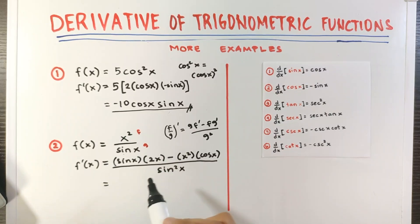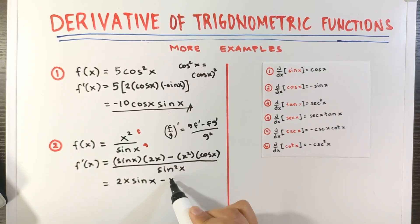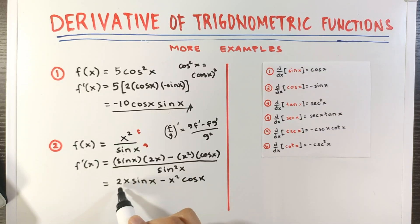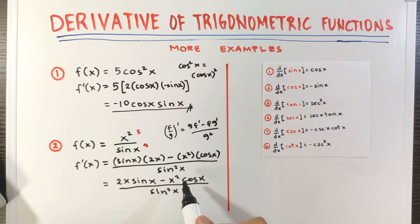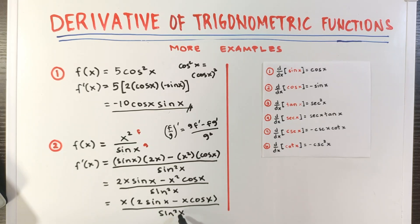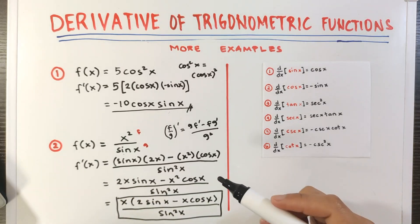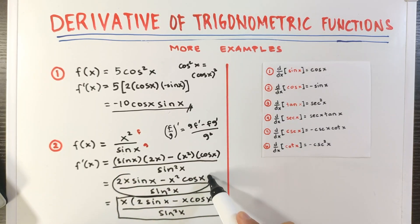Let's simplify. 2x times sine x is 2x sine x, then we have minus x squared cosine x, all over sine squared x. We can factor out x as a common factor between the two terms in the numerator. So we have x times the quantity 2 sine x minus x cosine x, over sine squared x. This is the final answer. If you are not required to write the final answer in factored form, the unfactored form is also acceptable.